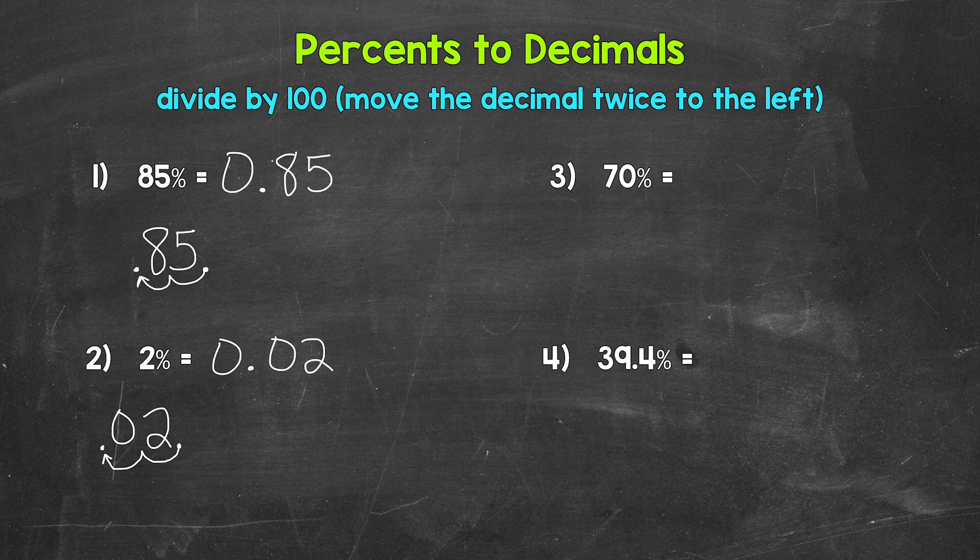Let's move on to number three, where we have 70%. I'm going to rewrite this underneath with a decimal, and then let's divide by 100. So move the decimal once, twice, to the left. So we get 0.70. 70% equals 0.70, 70 hundredths as a decimal.